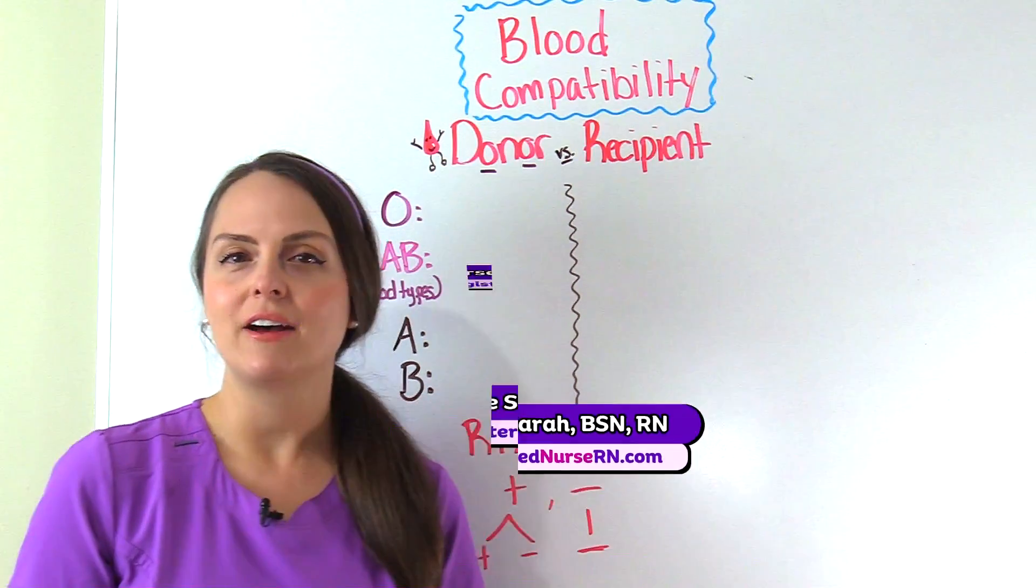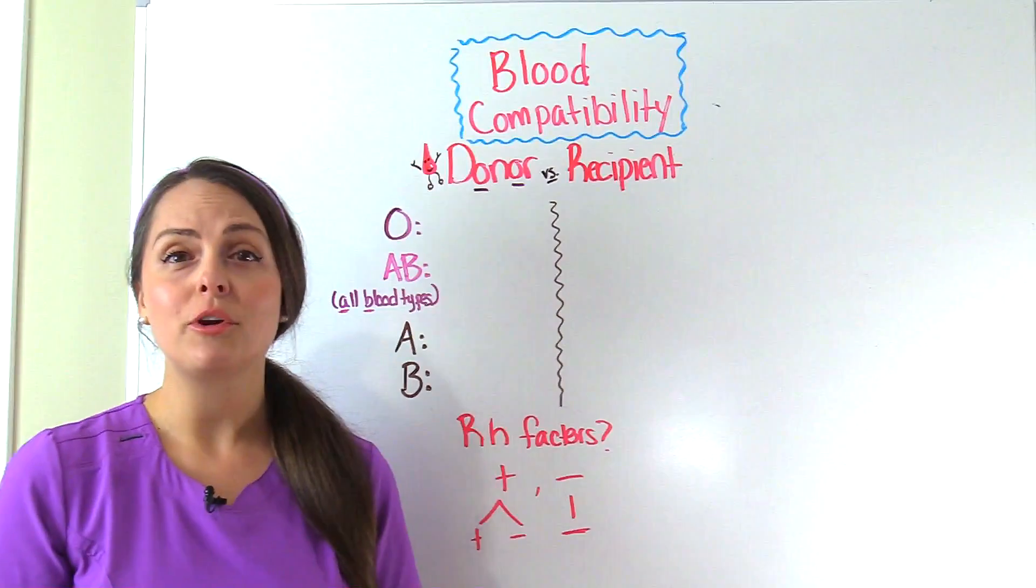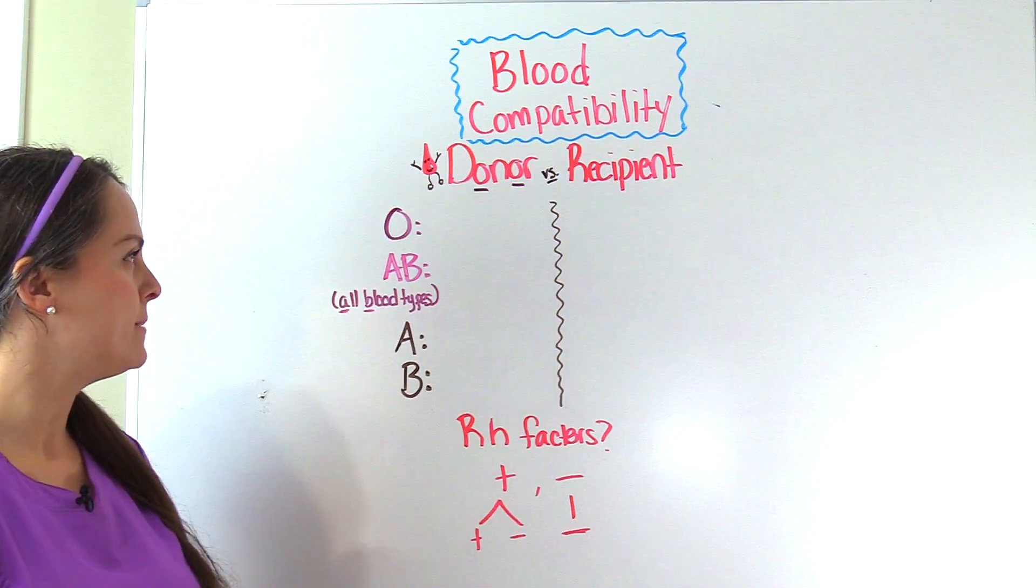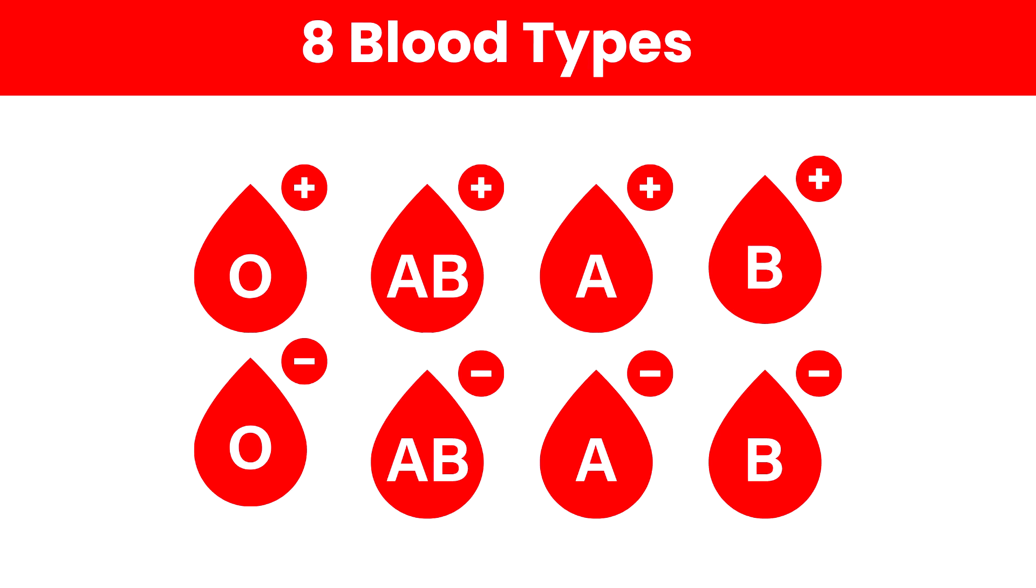I want to go over an easy way on how to remember blood type compatibility. We have four main blood groups: O, AB, A, and B. From that we get the eight blood types like O positive, O negative, A positive, A negative, and so forth.